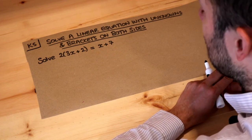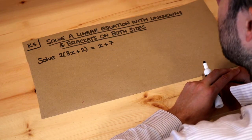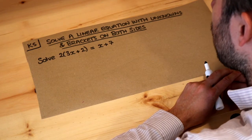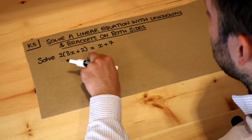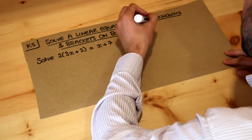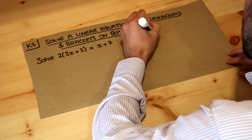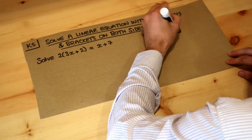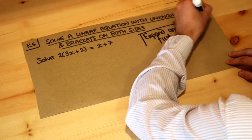Hello and welcome to this Dr Rossmaas key skill video on solving a linear equation with unknowns and brackets on both sides of the equation. The key thing here is that if you have any brackets you should expand out the brackets first, and then we'll tidy up after that.